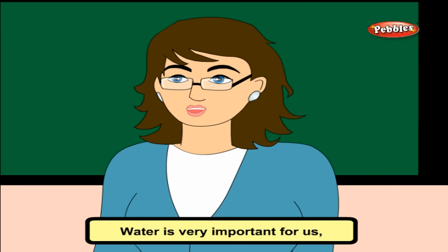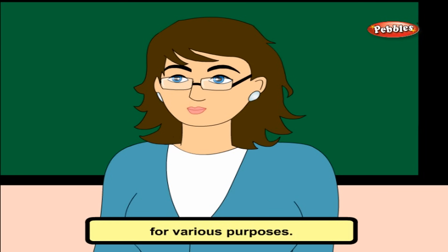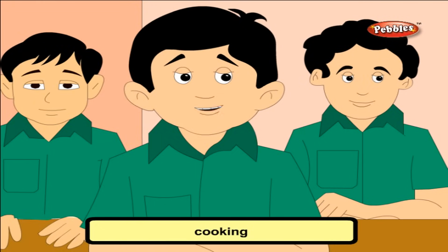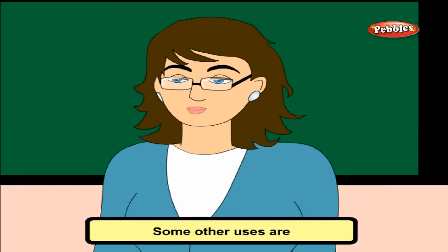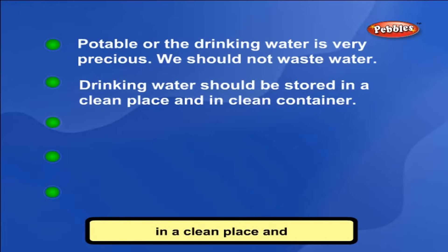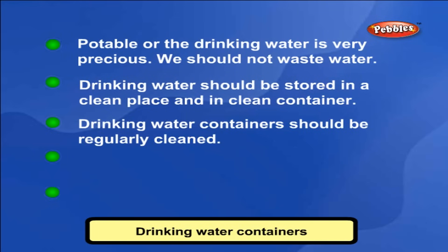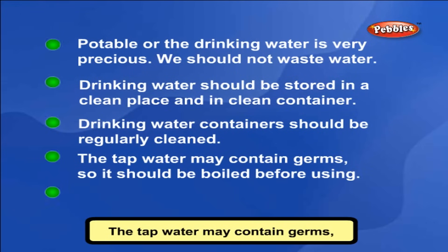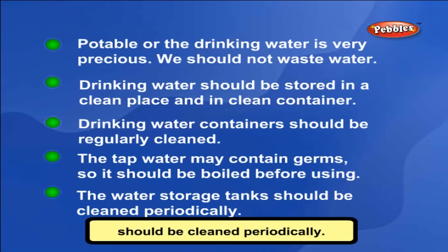Uses of water: Water is very important for us, for animals and for plants. Apart from drinking, we use water for various purposes — cooking, washing, bathing, swimming and watering plants. Other uses include water transport like ships and boats, and water in dams is used to generate electricity. Tips to handle water: Potable or drinking water is very precious and we should not waste it. Drinking water should be stored in a clean place in a clean container, and containers should be regularly cleaned. Tap water may contain germs, so it should be boiled before use. Water storage tanks should be cleaned periodically.